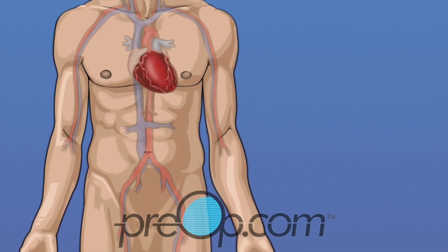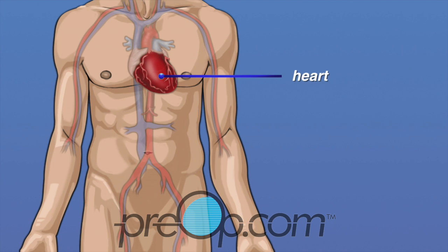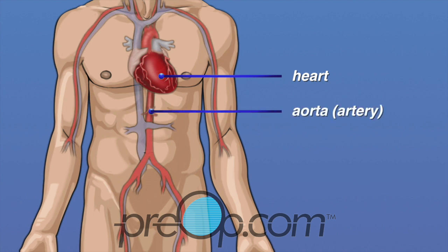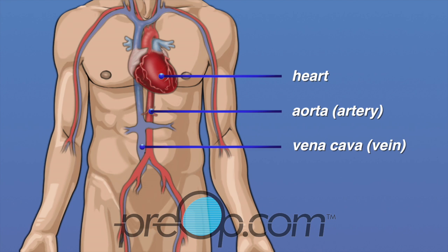Let's begin by reviewing information about your body. Your heart is in the middle of your chest, under your ribs. It is the muscle that pumps blood to the rest of your body. Blood flows through tubes called blood vessels. The aorta is the largest artery in the body and the blood it carries is rich with oxygen. Veins are a different type of blood vessel that carry blood back to the heart. The vena cava is the largest vein in the body and it carries oxygen-poor blood back to the heart.